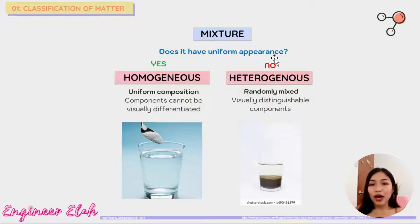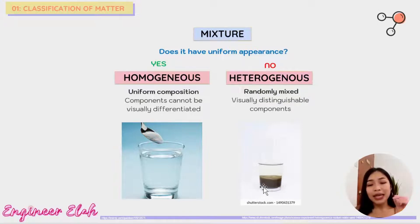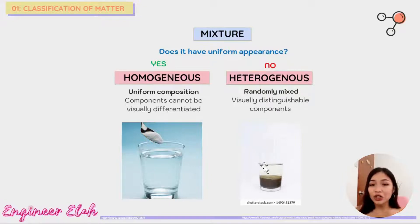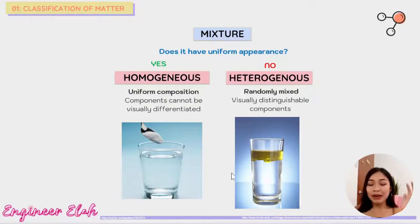On the other hand, a heterogeneous mixture consists of randomly mixed components that are visually distinguishable. For example, water and sand — when you mix them, you can see the sand particles, and after a while when it settles, you can see two layers. Looking from top to bottom, the appearance is different, so it is not uniform. Take note that heterogeneous mixtures are not limited to solid and liquid — liquid-to-liquid mixtures like oil and water also separate into distinct layers, and these multi-phase systems are considered heterogeneous mixtures.